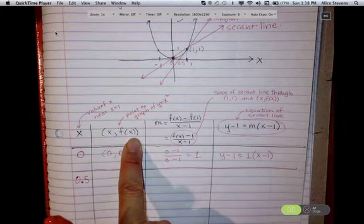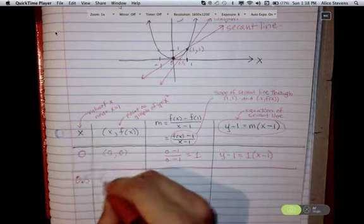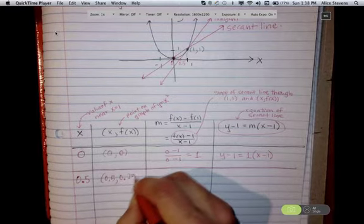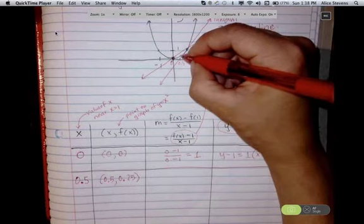And I'm looking at the point 0.5, 0.25. That's this point right here on the graph.